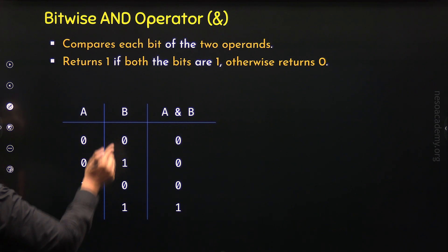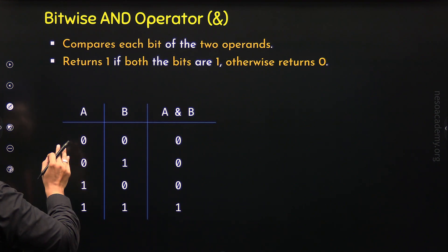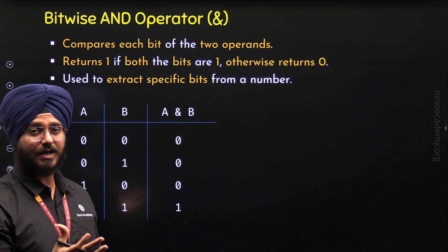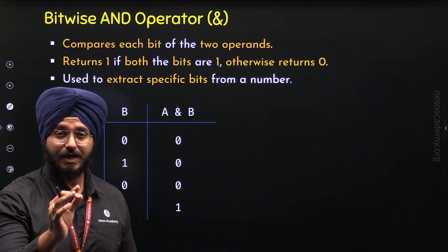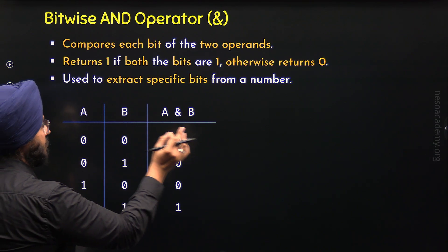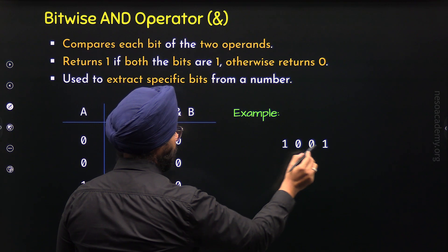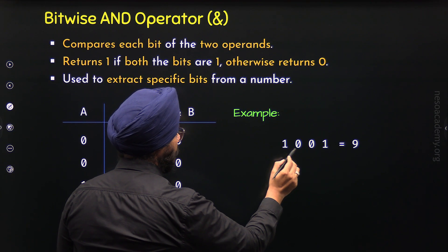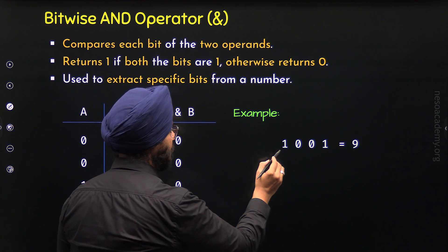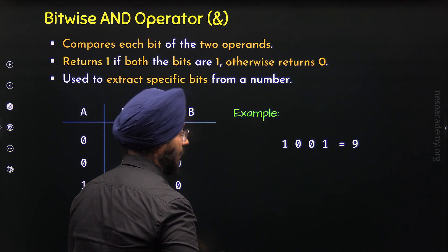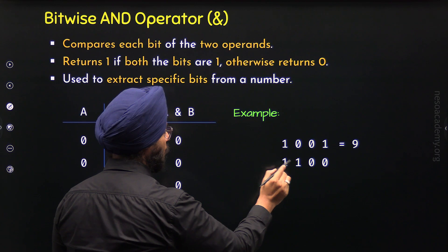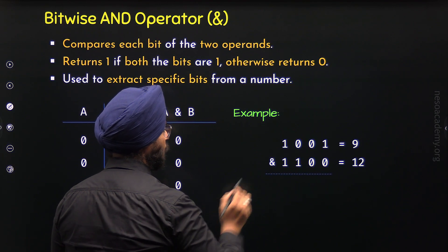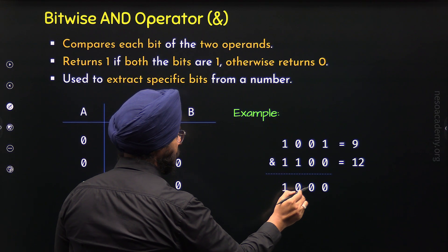The use case of the Bitwise AND Operator is that we can use it to extract specific bits from a number. If we want to extract specific bits, we can use the Bitwise AND Operator. For example, let's say we have the binary number 1001, which is 9 in decimal. Now, if we want to extract the first two bits of this binary number, we can set the corresponding bits in the second operand to 1. So the second operand becomes 1100, which is 12 in decimal. Performing Bitwise AND of these two binary numbers gives us 1000 as the result.